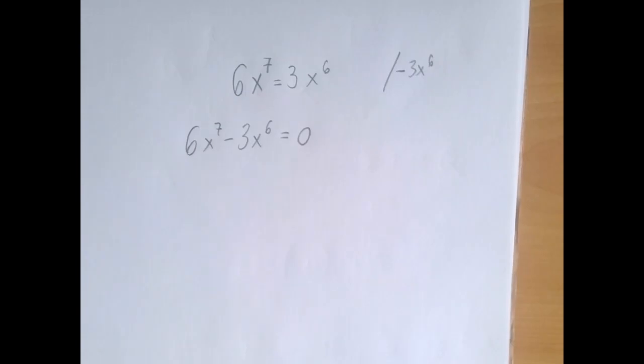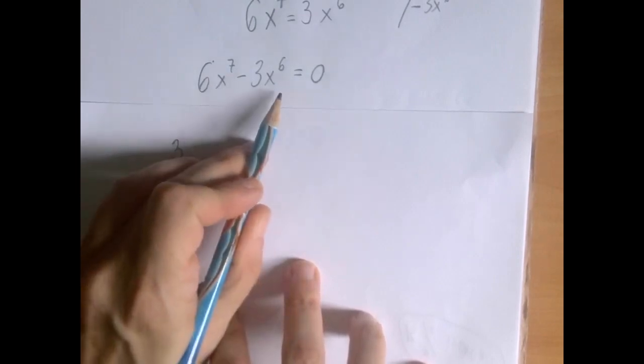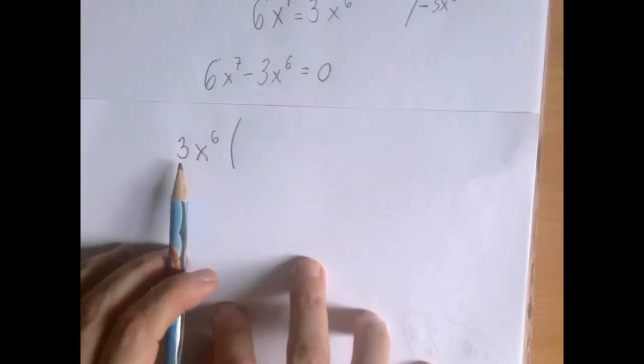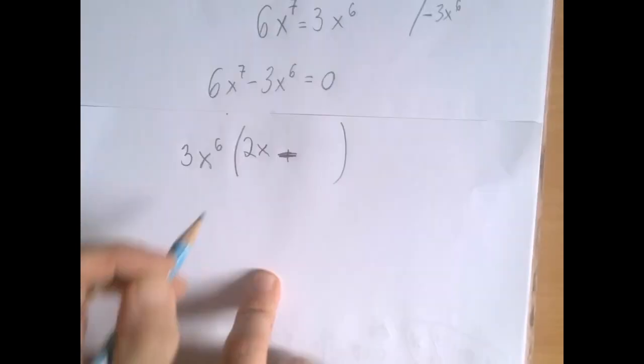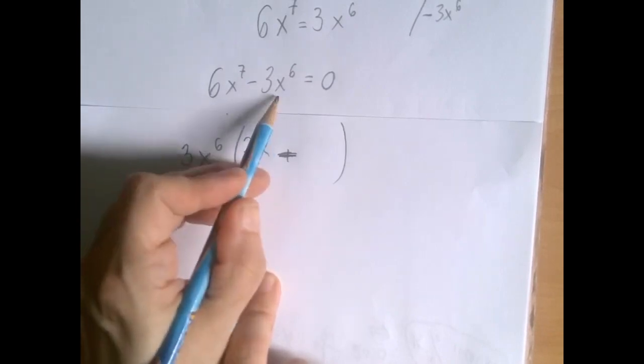So now let's factor. There is going to be a sizable GCF, right? Between the numbers, the 3, between x to the 7 and x to the 6, they both have at least x to the 6. And then 3 to 6, that's a 2. x to the 6 to x to the 7 is x. And 3 to the x to the 6 is there.